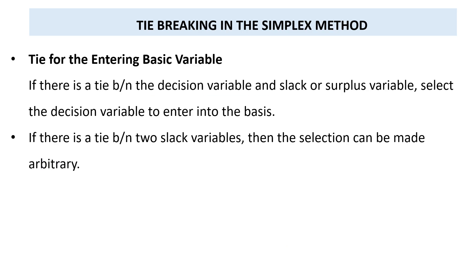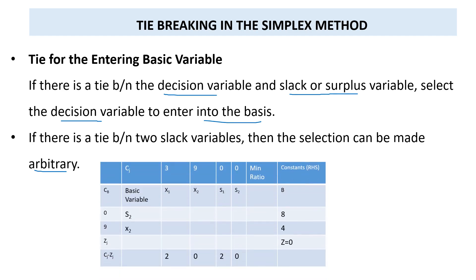Rule number two: if there is a tie between the decision variables and the slack or surplus variables, select the decision variable to enter the basis. Rule number three: if there is a tie between two slack variables, the selection can be made arbitrarily. For example, if there is a tie between a decision variable and a slack variable, we must select the decision variable — in this case x1. If the tie is between two slack variables, we can choose either one.